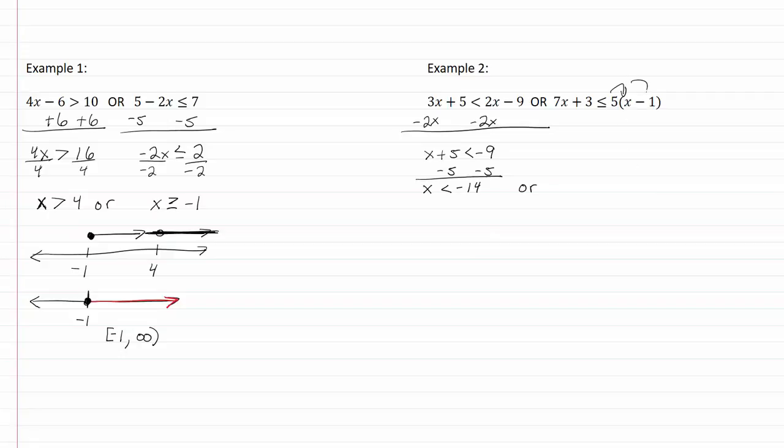Bring down my or here. I'll have to distribute. So I have 7x plus three is less than or equal to 5x minus five. Get my variables on one side. So I now have 2x plus three less than or equal to negative five.